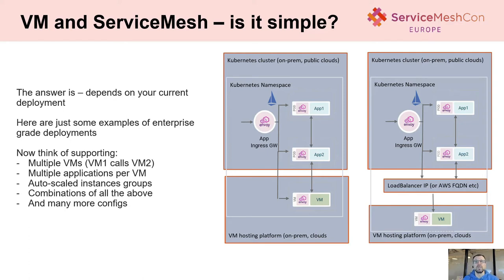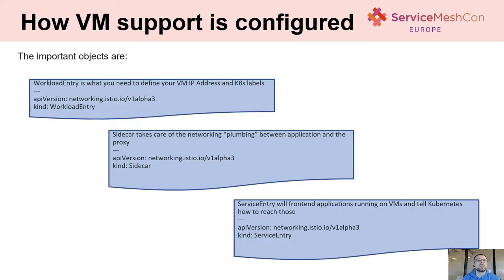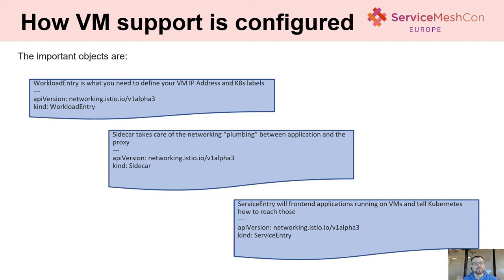To onboard a VM, you need to create three objects. Object number one is a WorkloadEntry, which provides a description of the VM — its IP address, labels, and other attributes. WorkloadEntry is the object used to bootstrap the VM: data from this object together with certificates and the mesh config gets transferred to the VM. The VM gets bootstrapped, connects back to Istio, gets authorized, and certificate exchange happens — then the VM becomes part of your service mesh.